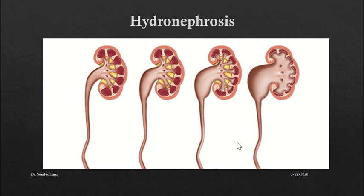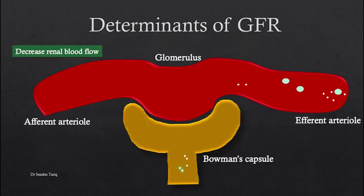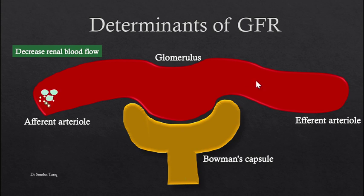The development of back pressure leads to dilatation of the renal tubules, ureter, and renal pelvis. This condition is called hydronephrosis. As seen here, there is dilatation of the ureter and dilatation of the renal pelvis, ultimately leading to degeneration of the nephrons and a decrease in the number of functioning nephrons. Hydronephrosis occurs whenever there is dilatation of the renal tubules, renal pelvis, and ureter due to blockage of the ureter or renal stones.